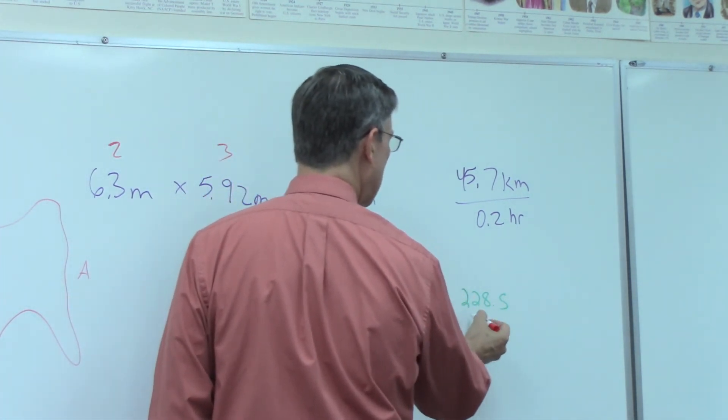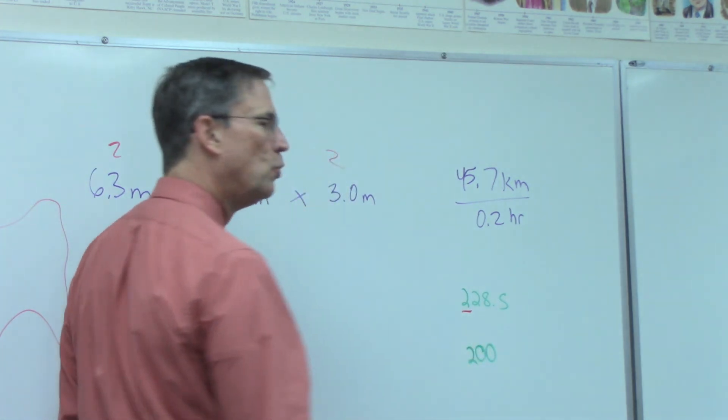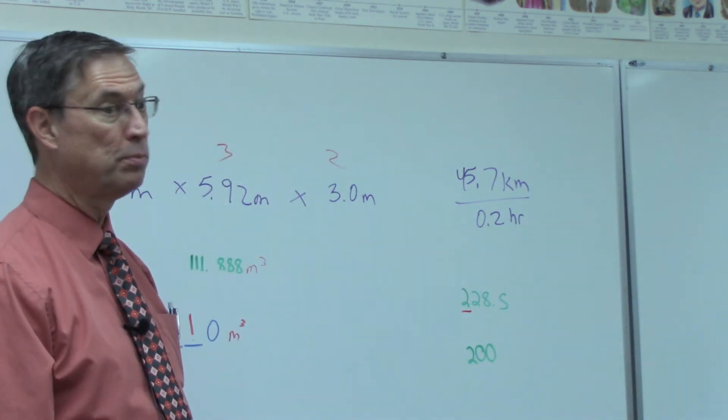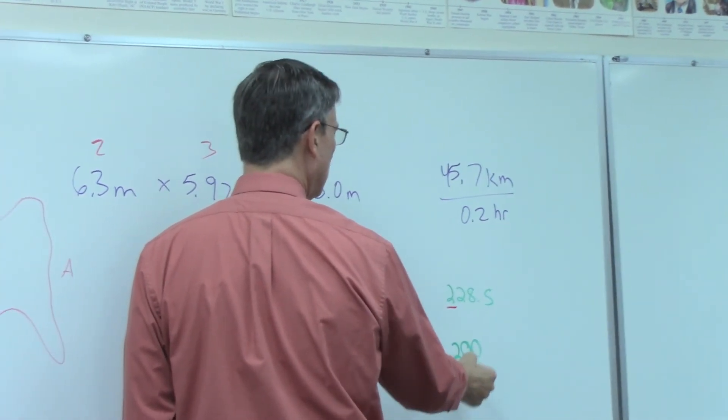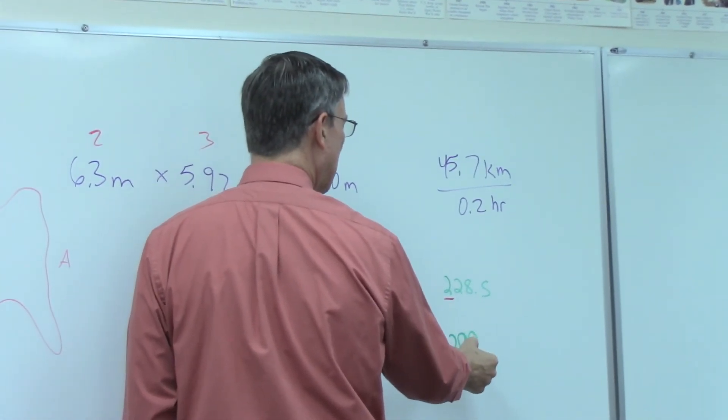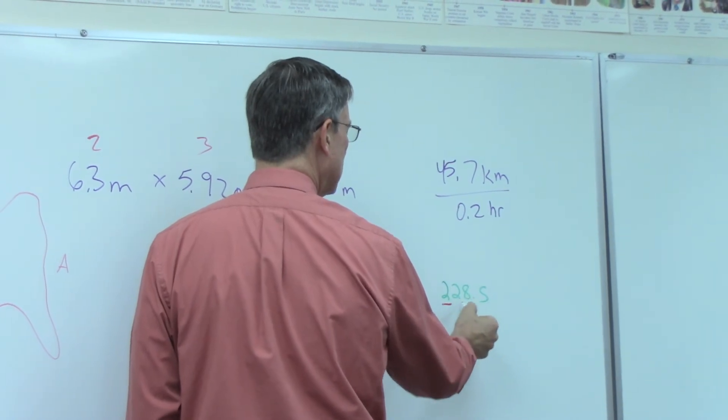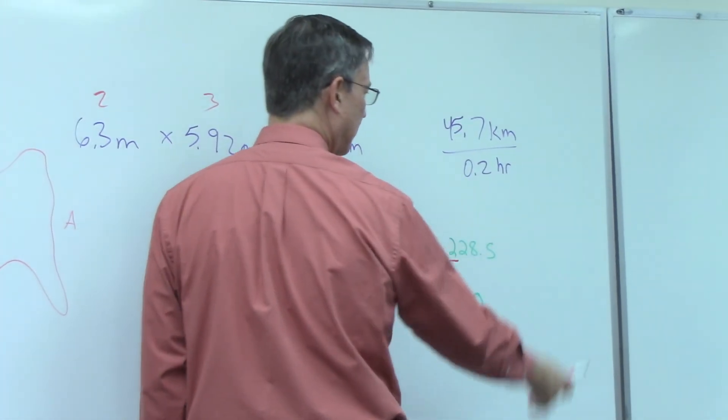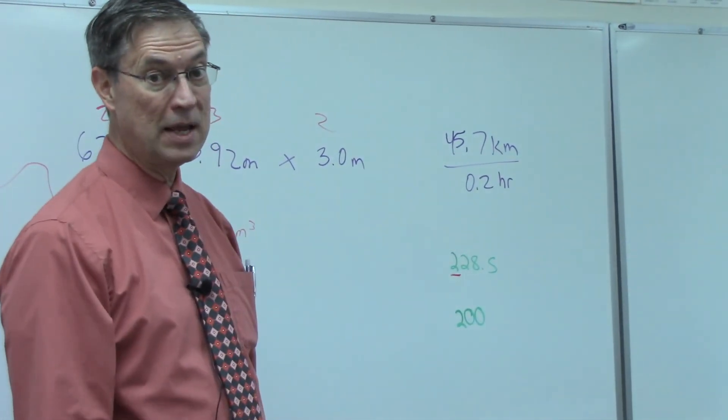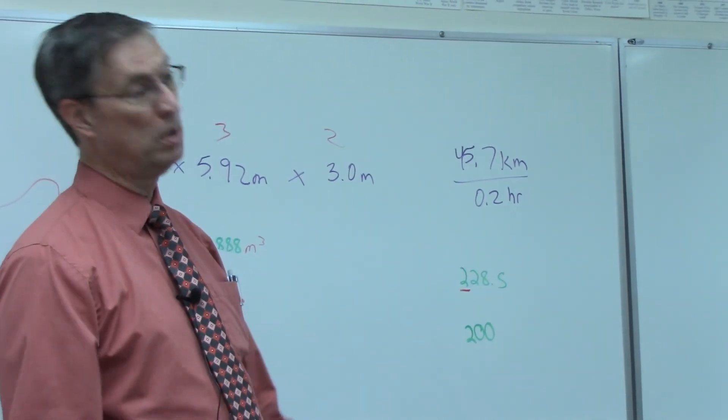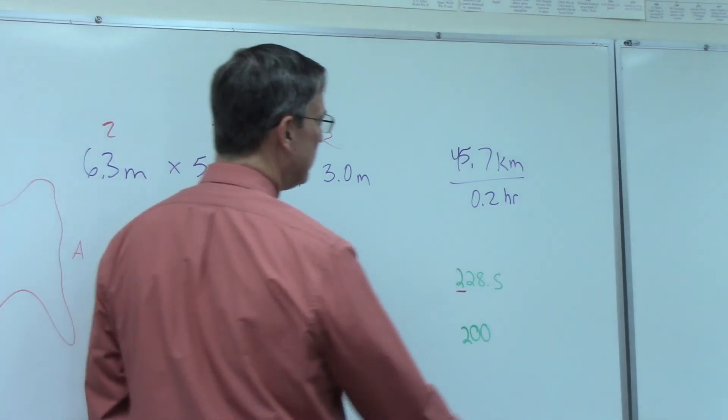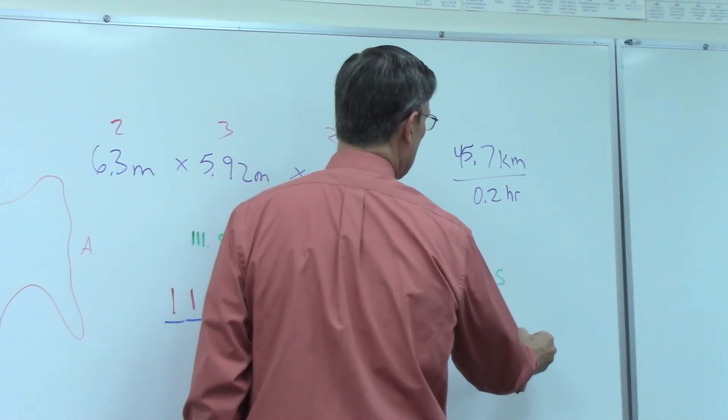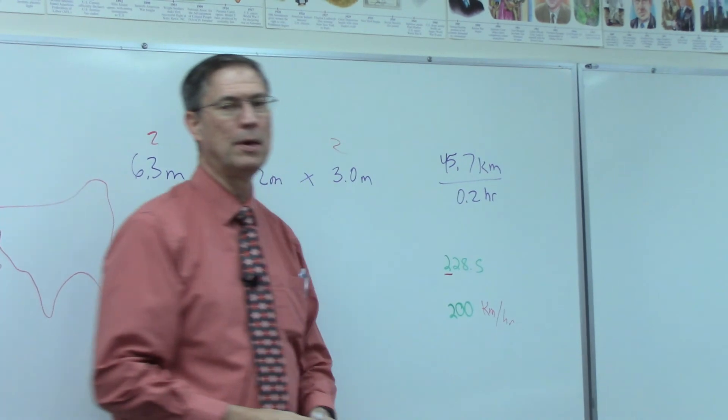So when I do the math, I get 228.5, and then that means I can only use one, but it has to stay in the hundreds place value. So I use the two because that's in the hundreds place. It's the only significant figure, and then I'm rounding. So these become zeros, and I don't have to add .0. In fact, I should not add .0. As soon as I add .0, now I'm turning them all into significant figures, and I can only have one significant figure. Don't forget your units: kilometers per hour for that one.